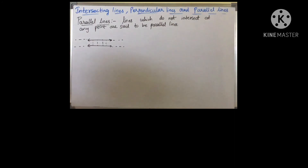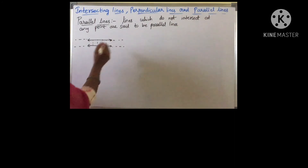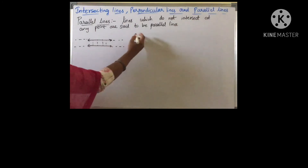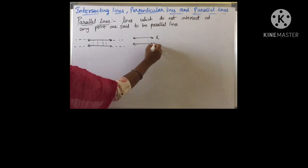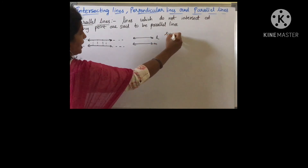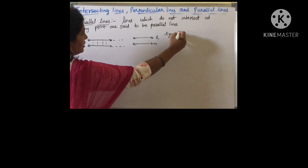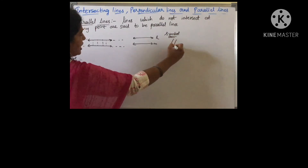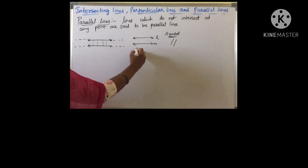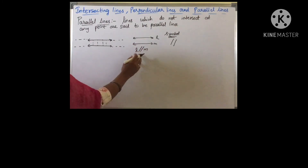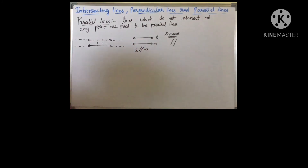Parallel lines are represented with a pair of vertical lines between the names of the lines. For example, this line is L and this line is M. The symbol is a pair of vertical lines, so I can write L is parallel to M.